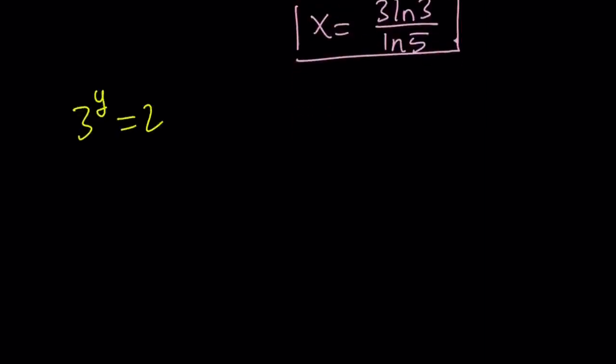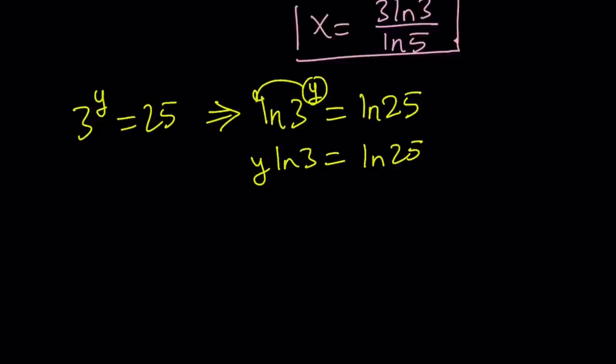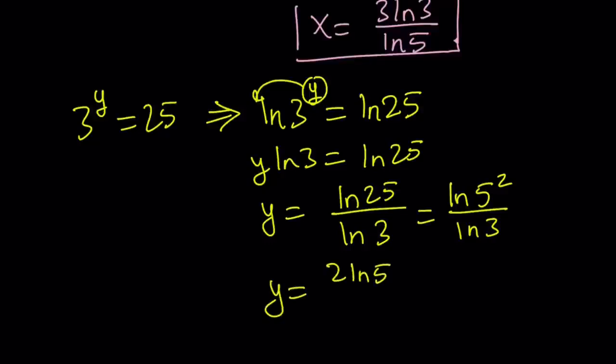So now we have 3 to the power y equals 25. ln both sides. ln 3 to the power y equals ln 25. By the way you don't have to use natural log. You could also use common log which is log which is base 10. So let's go ahead and move the y to the front and that's going to give us y ln 3 equals ln 25. And then y can be written as ln 25 over ln 3. And since 25 is 5 squared we can simplify it. And from here y becomes 2 times ln 5 over ln 3.